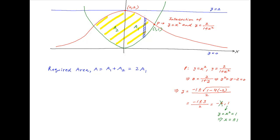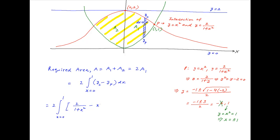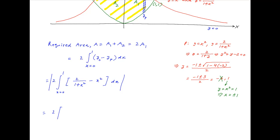The area A1 is determined by integrating a thin strip of thickness dx and height equal to the difference between the ordinates of y = 2/(1 + x²) and the parabola y = x², from x = 0 to x = 1. The required area is therefore 2 times the integral from 0 to 1 of (yc − yp) dx, where yc = 2/(1 + x²) and yp = x². Since area is a positive quantity, we take the modulus of this expression.